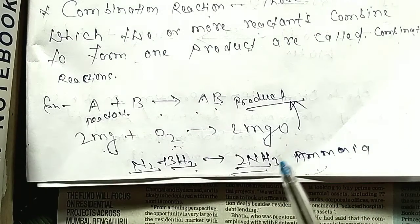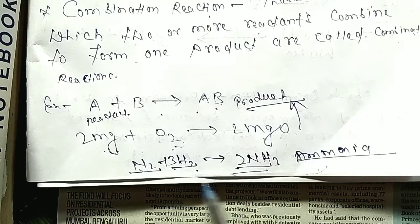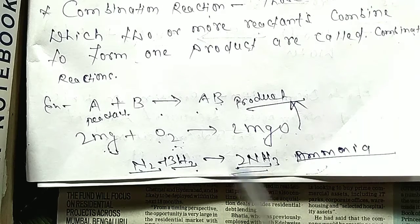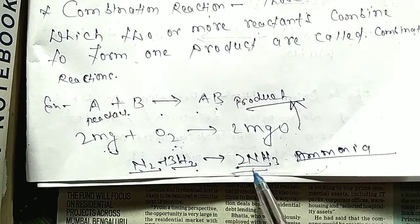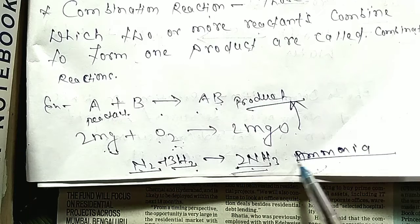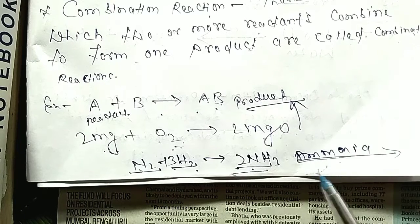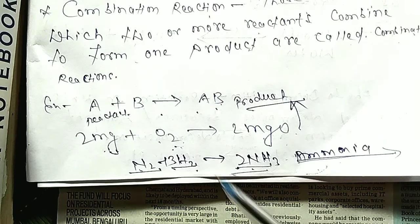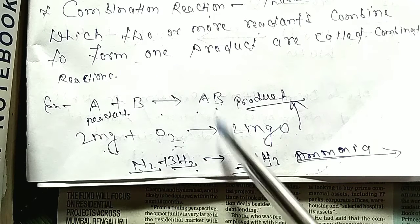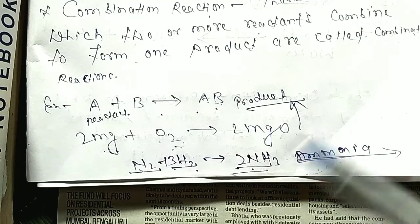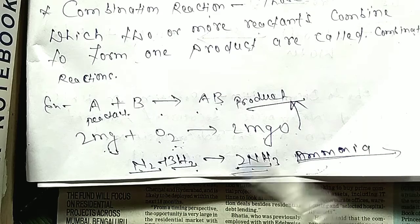Another example: N₂ plus H₂ gives NH₃. When nitrogen and hydrogen combine, they form ammonia (NH₃). The equation is balanced as 2 and 3. When two or more elements combine together to form a single product, it is called a combination reaction.